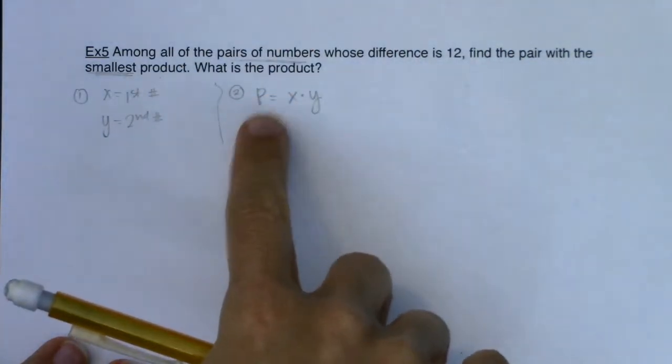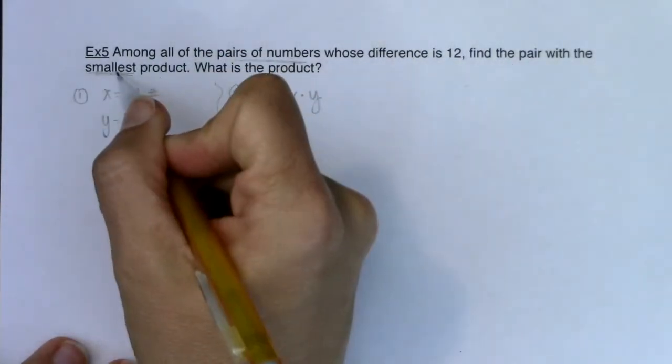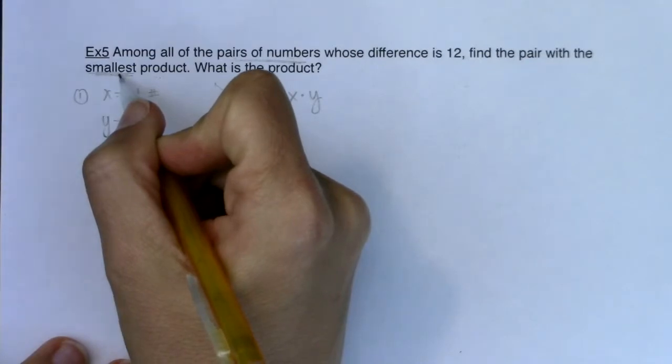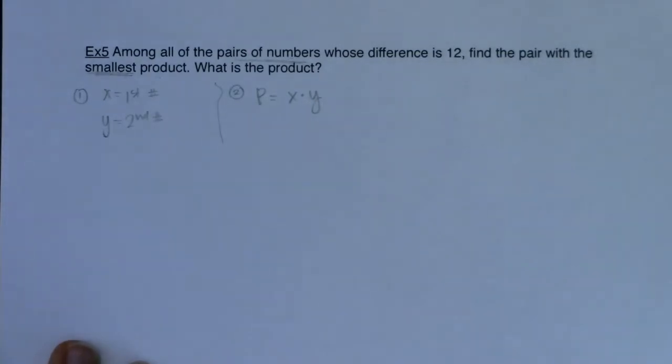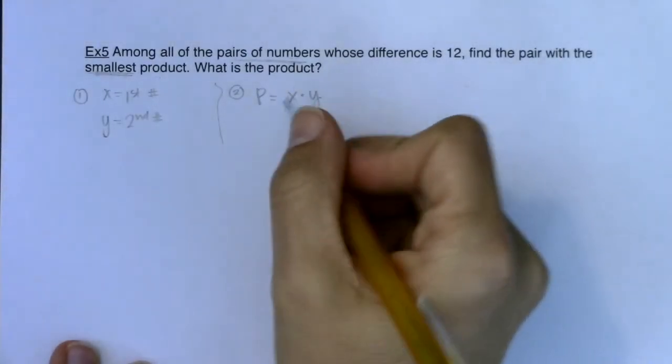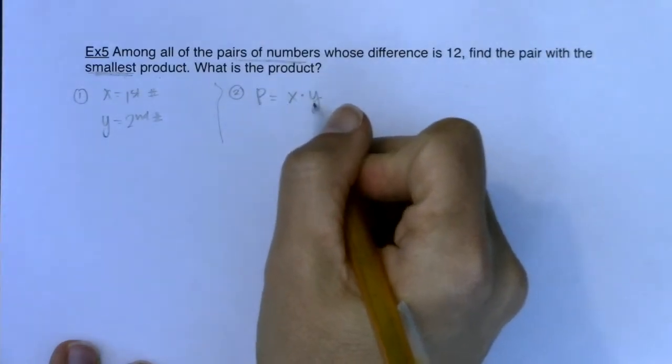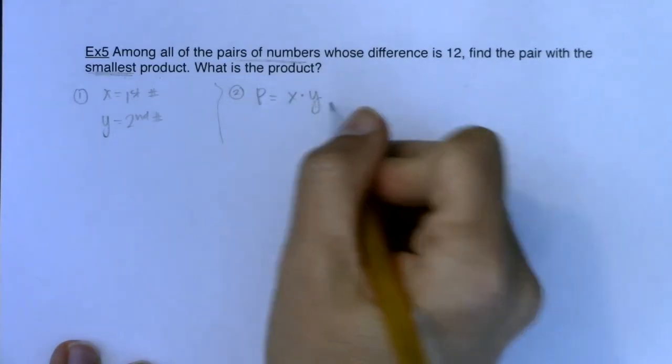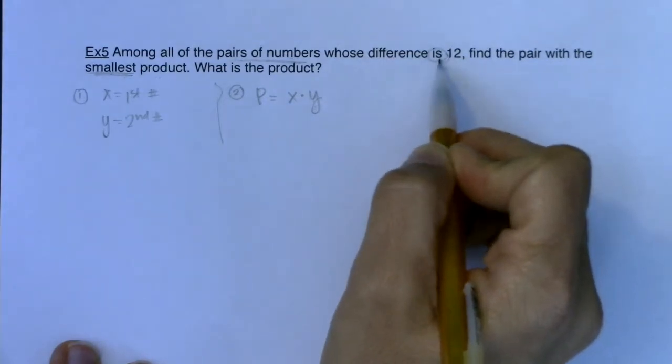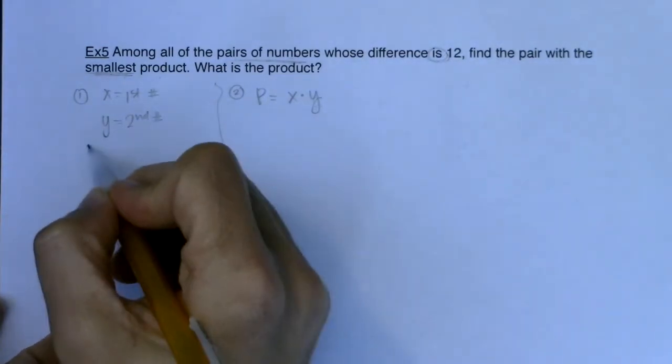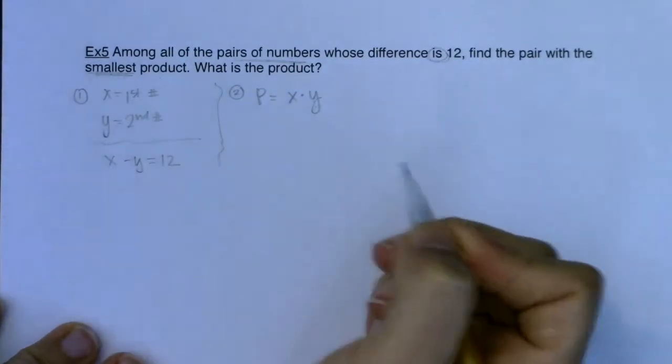And I'm going to call the product just x times y. I would like to maximize, or actually, excuse me, I would like to minimize this. I want the smallest product. So if you ever want to minimize or maximize something in a math class, come up with an equation for it. Now the problem I'm working with here is I have two variables on the right side of the equation, and I need just one. So I need to swap one of these out. And we do have an equation here. We say their difference is 12. Is, that's that fancy math phrase for equal. So I know their difference is 12.